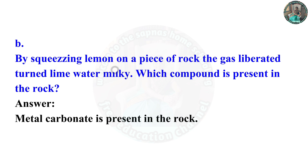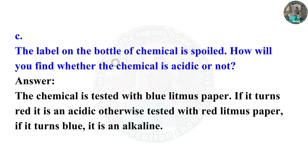Question B: By squeezing lemon on a piece of rock, the gas liberated turned lime water milky — which compound is present in the rock? Answer: Metal carbonate is present in the rock. Question C: The label on the bottle of a chemical is spoiled. How will you find whether the chemical is acidic or not? The chemical is tested with blue litmus paper. If it turns red, it is acidic; otherwise it is tested with red litmus paper. If it turns blue, it is alkaline.